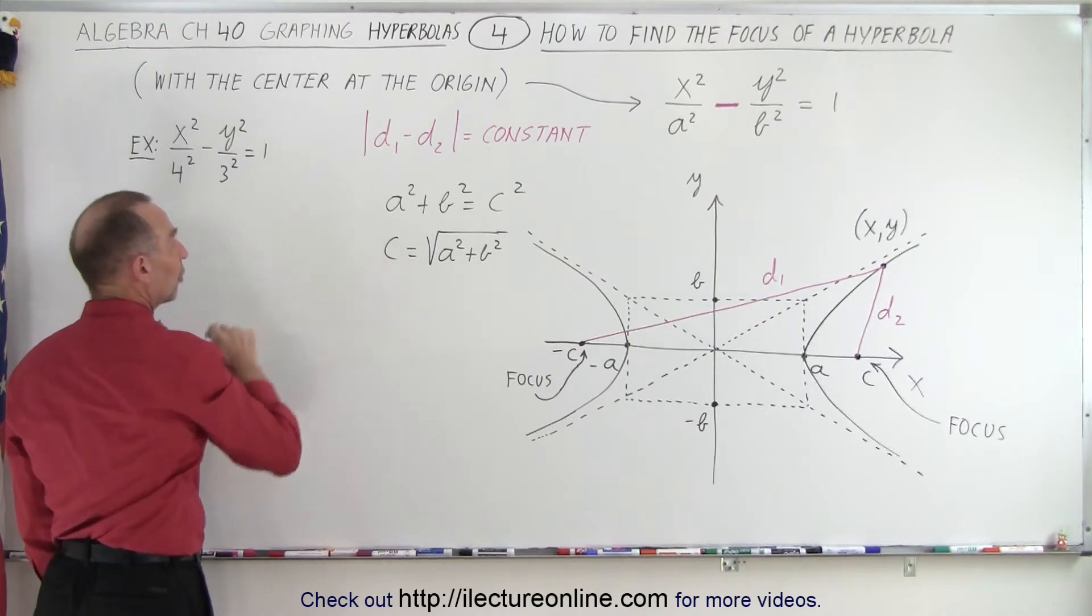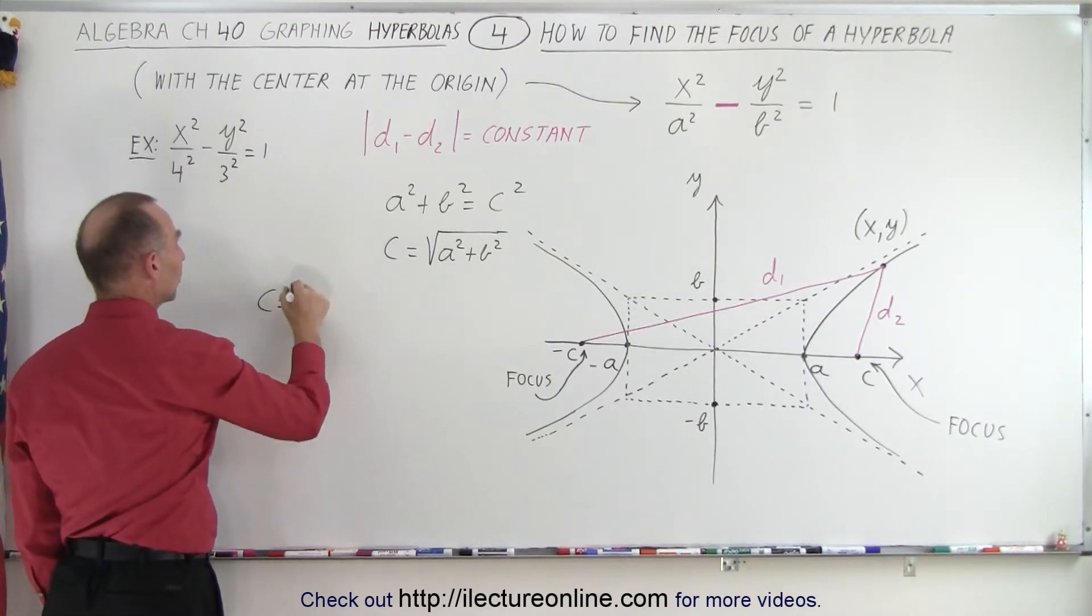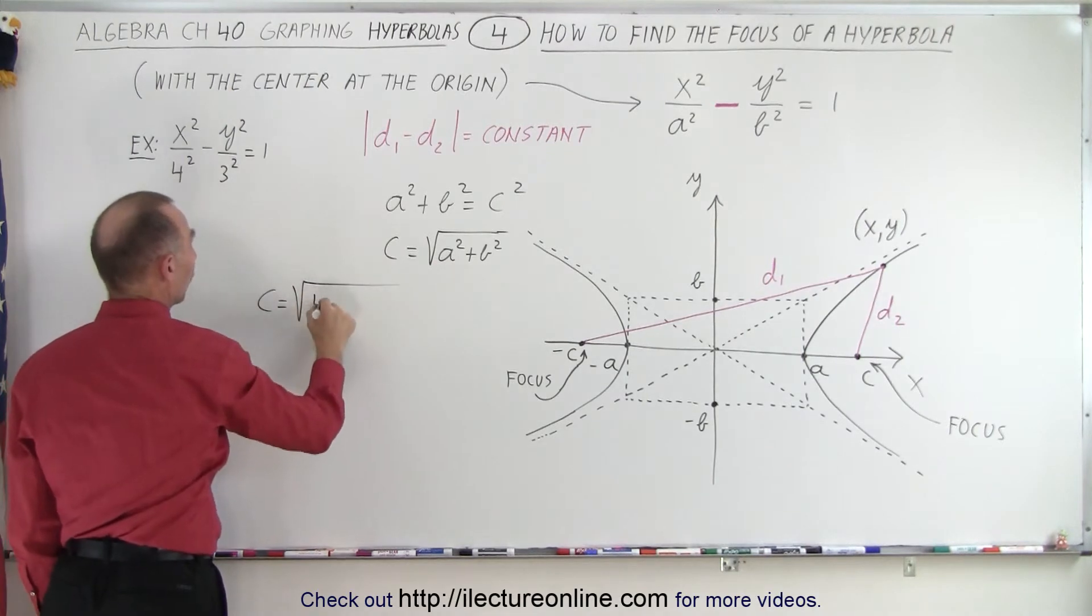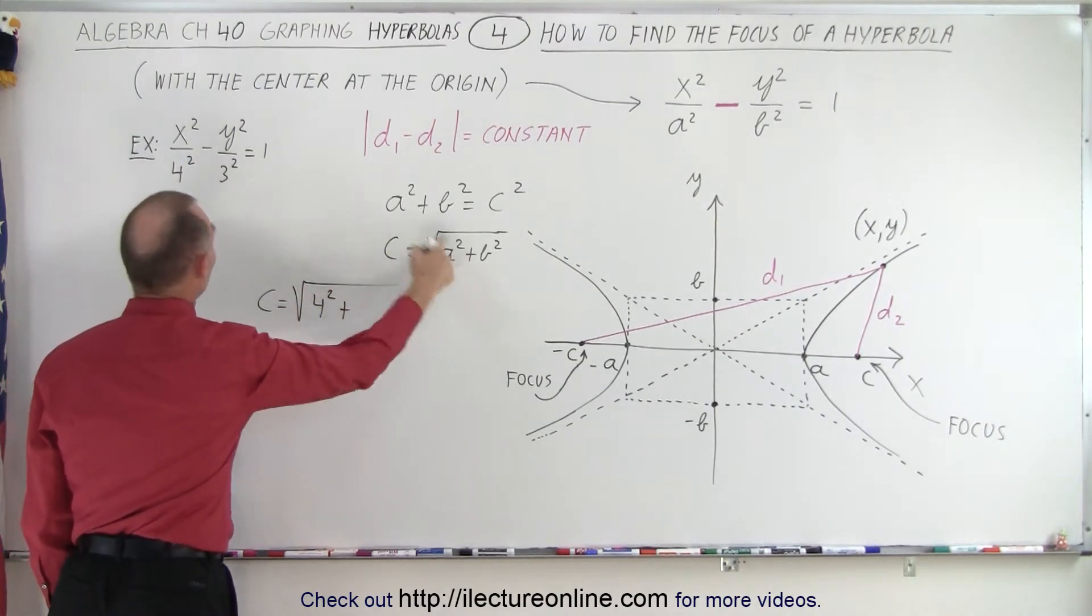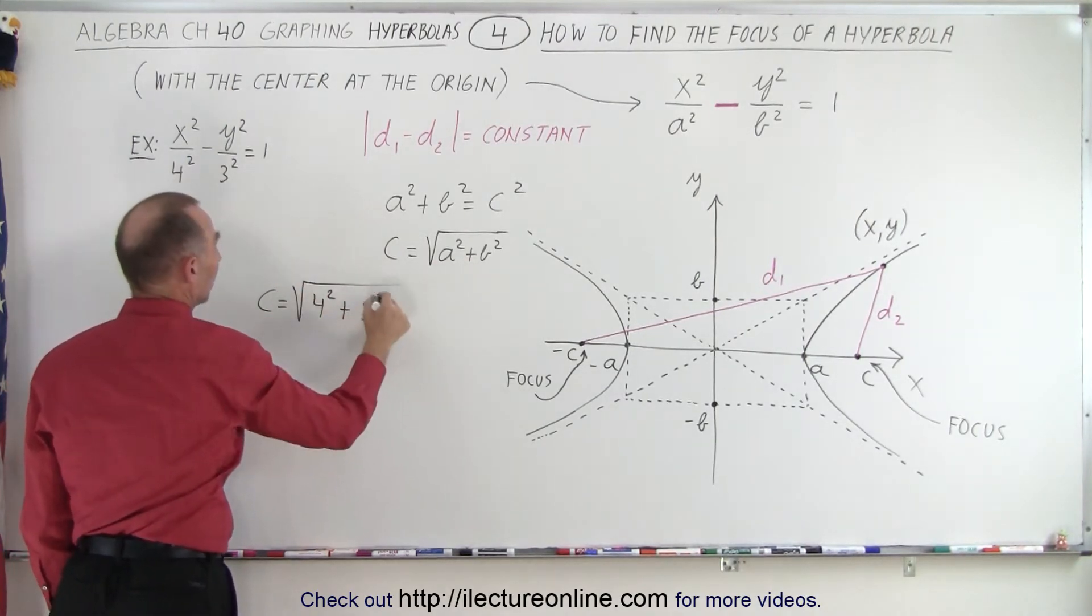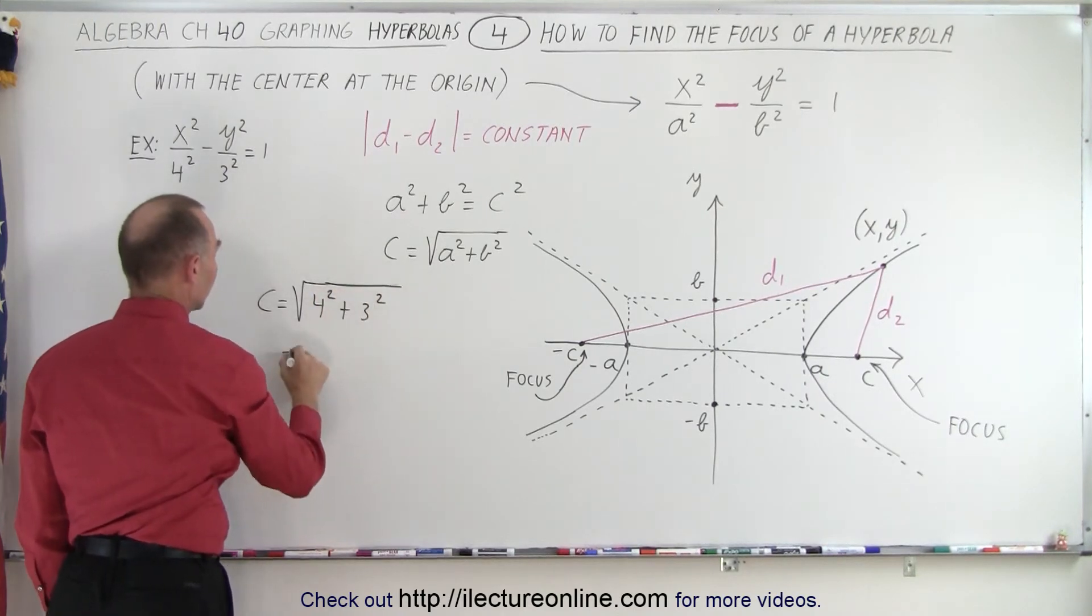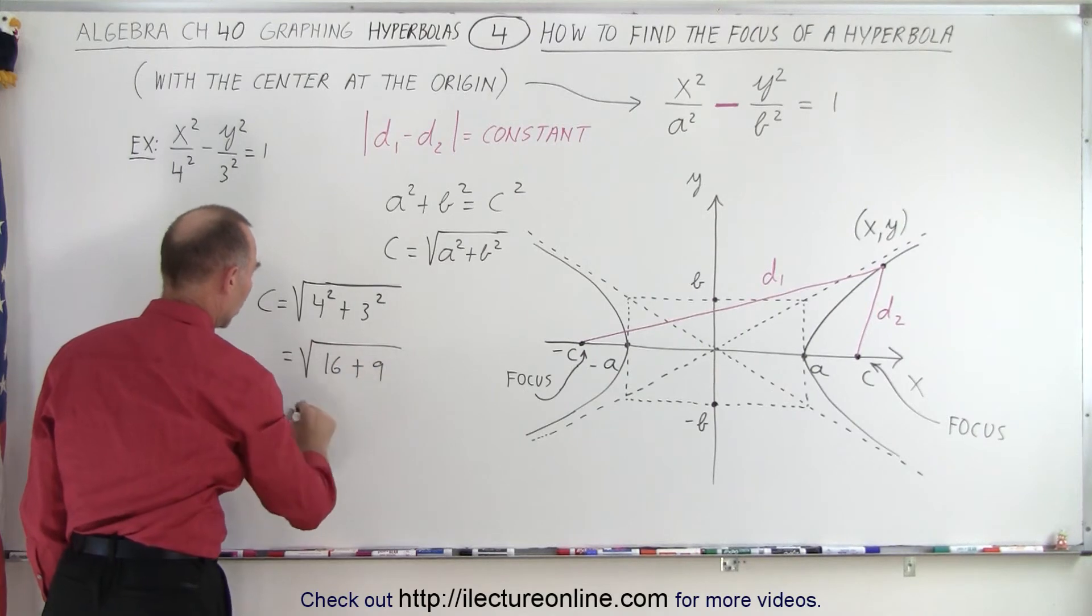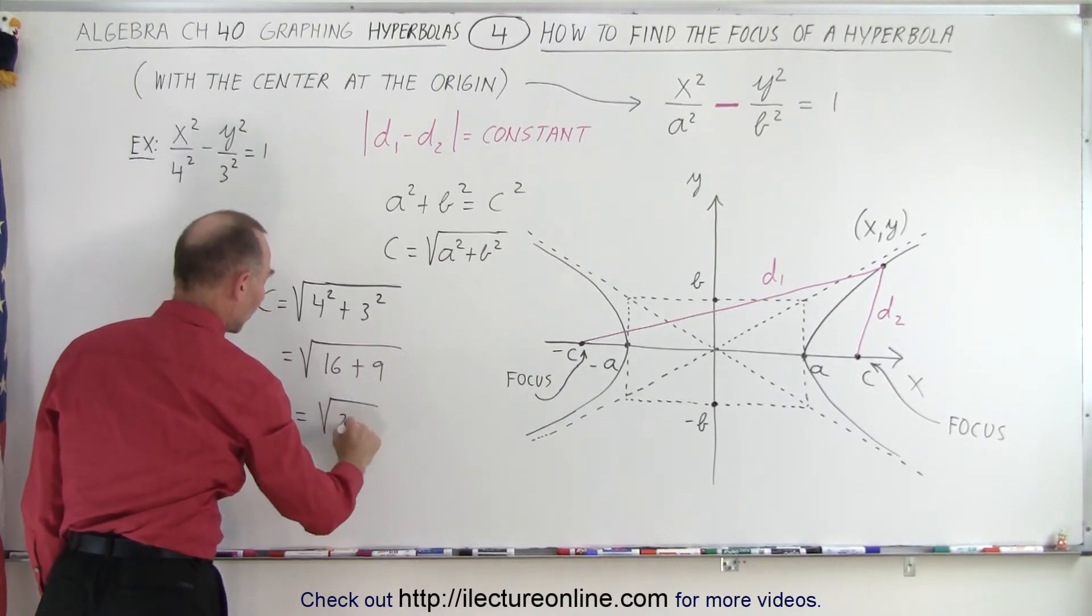So c is going to be equal to the square root of a², which is 4², plus b², which is 3². So this is equal to the square root of 16 plus 9, or the square root of 25.